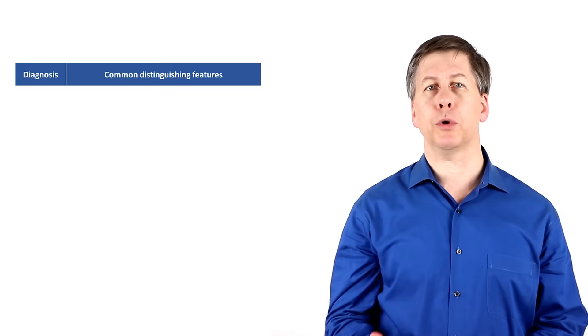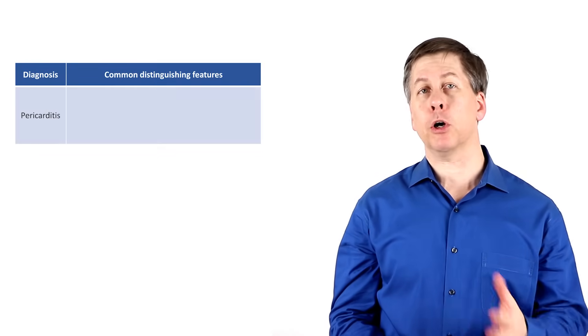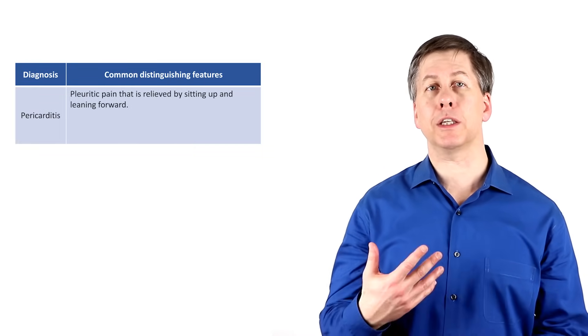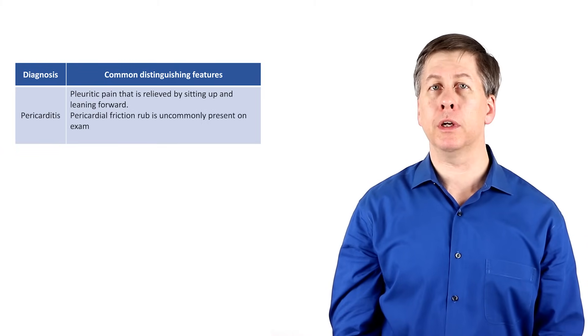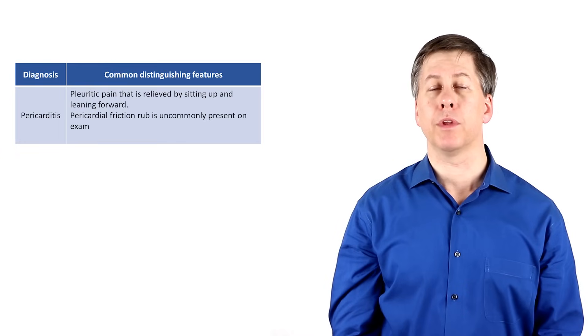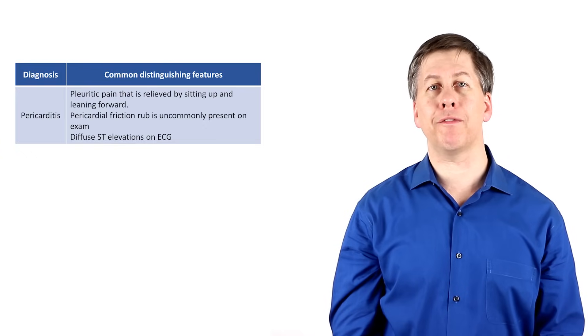Beyond this, there is no specific next step in the diagnostic algorithm, but there are features that increase the probability of particular diagnoses. So, for example, pain from pericarditis may be pleuritic and is relieved by sitting up and leaning forward. The exam may have a pericardial friction rub, but it's usually absent. The ECG commonly reveals diffuse ST elevations in more than one vascular territory.